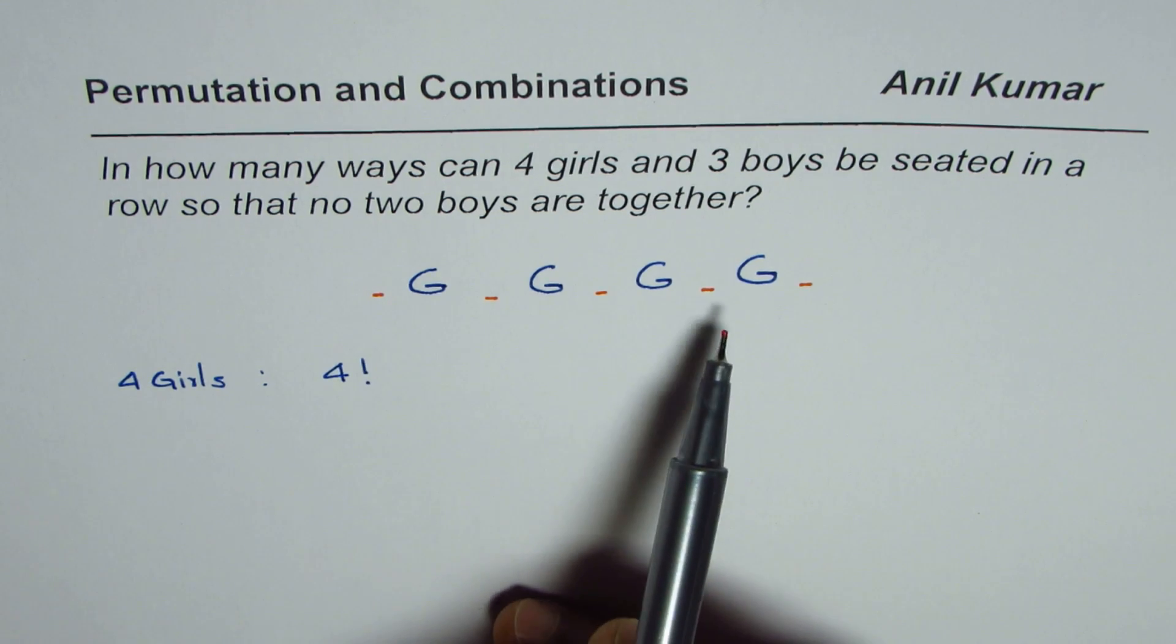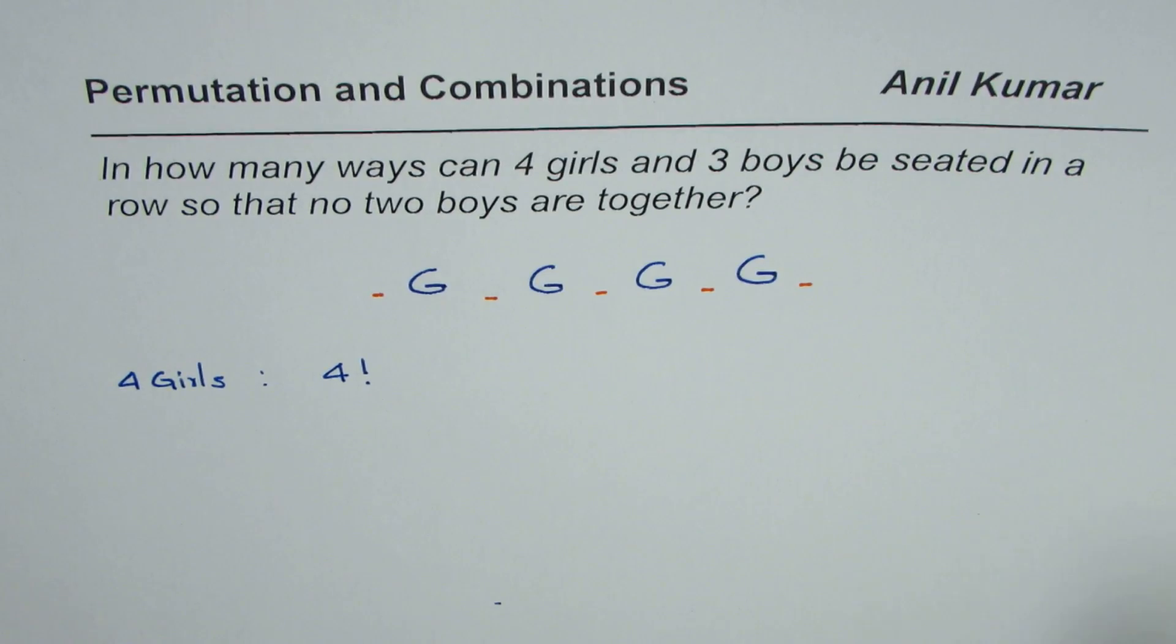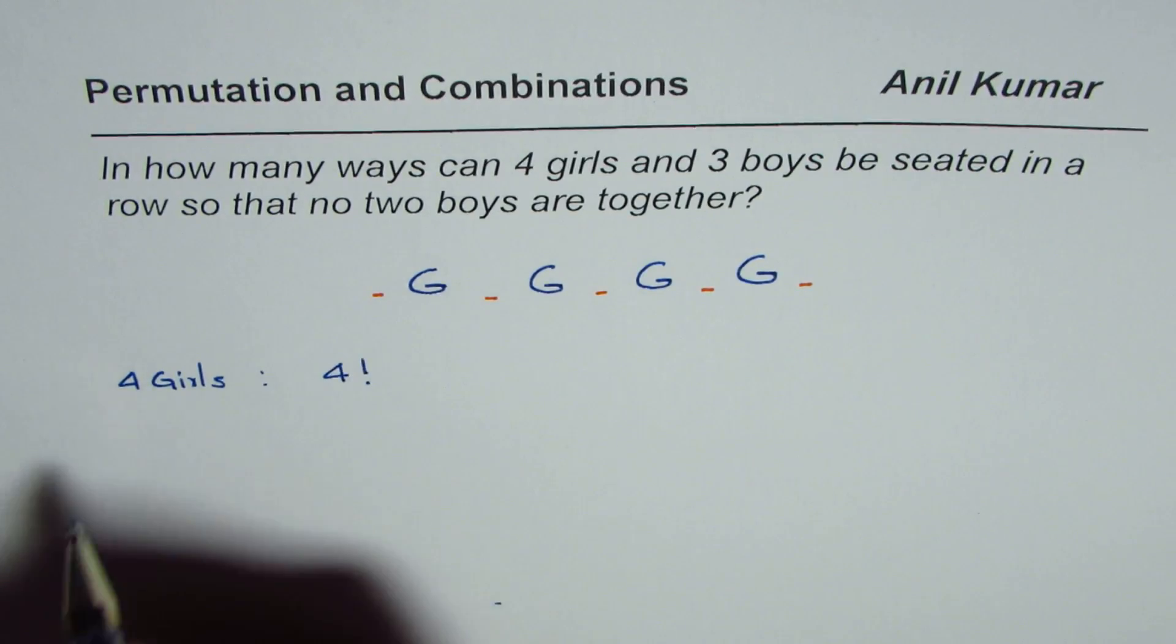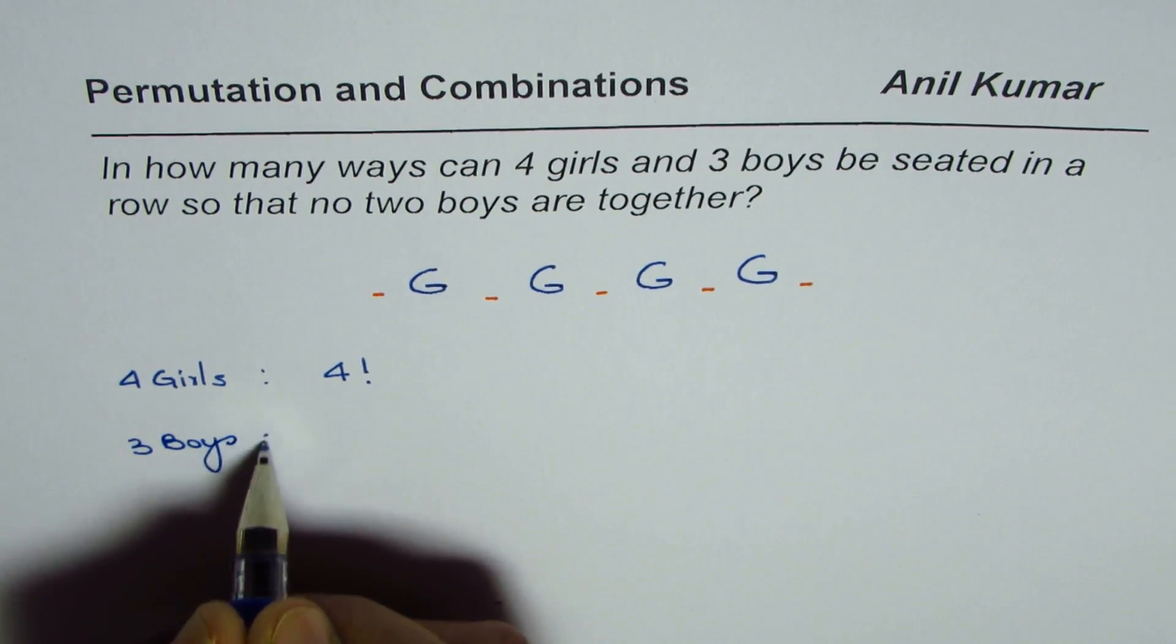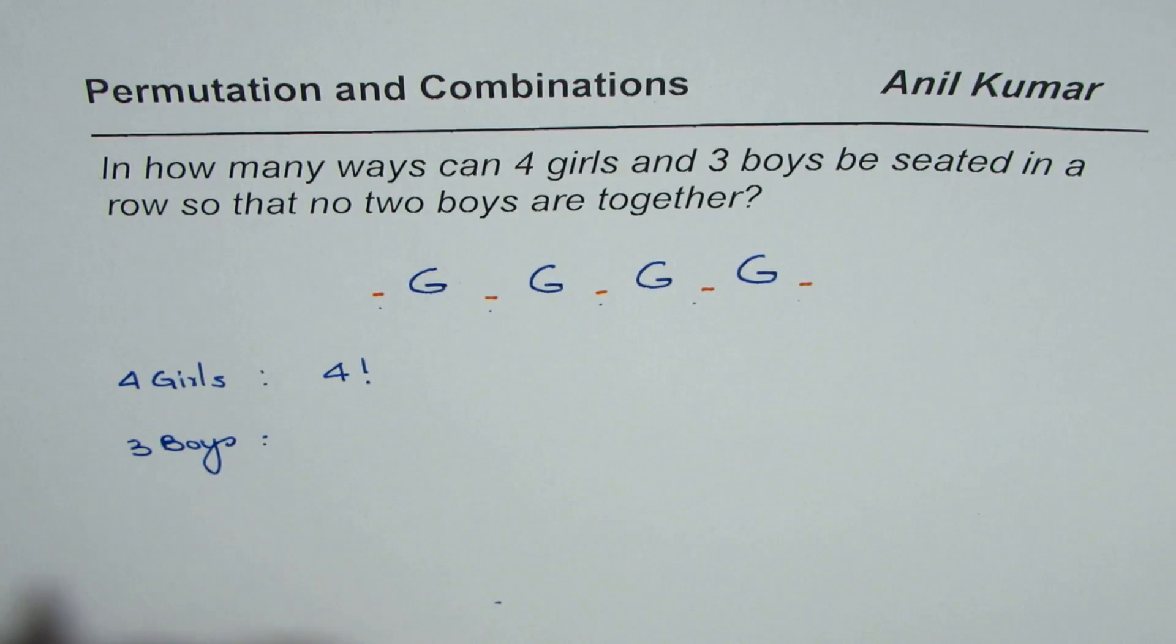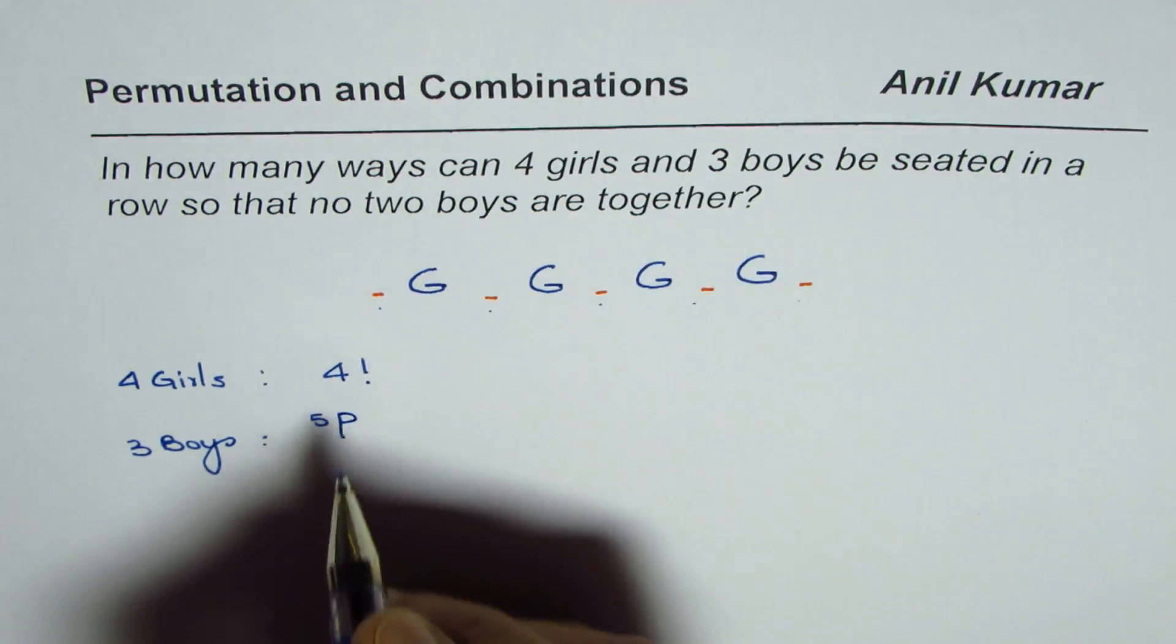The number of permutations when these five positions can be filled with three boys is 5P3. So that is what gives us the total number of count. As far as the three boys are concerned, they have five positions to fill. So it is 5P3, and there are three boys.